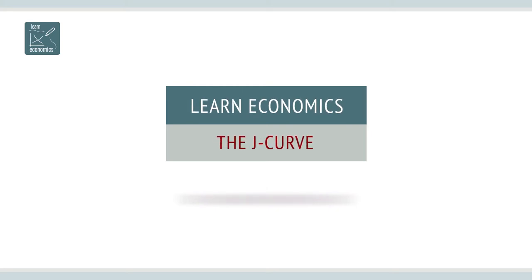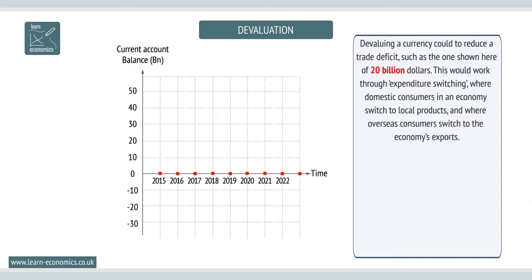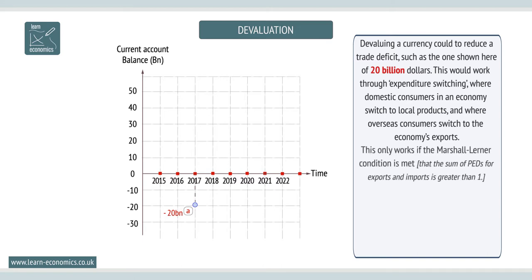Devaluation and the J-curve: devaluation to remedy a trade deficit may not work in the short run. Devaluation would work through a process called expenditure switching, where domestic consumers switch to local products and where overseas consumers switch to the economy's exports. This only works if the Marshall-Lerner condition is met, which is that the sum of PEDs for exports and imports is greater than one.